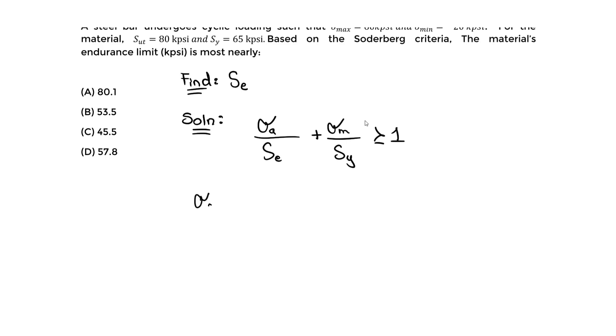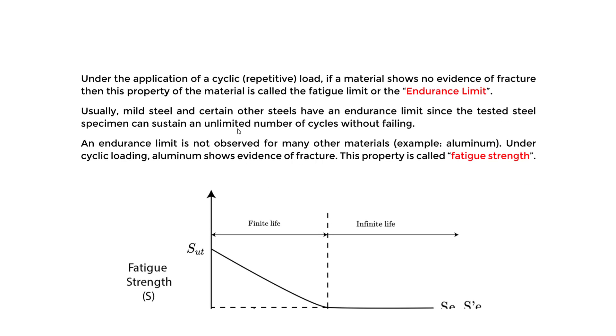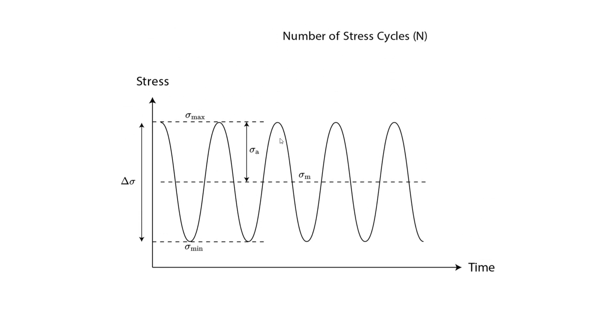For sigma_a, you should have this on your equation sheet, or we can prove it. The equation is: we take the maximum stress minus the minimum divided by 2. That's the alternating stress.